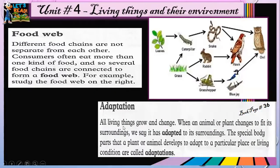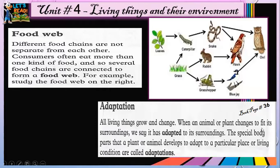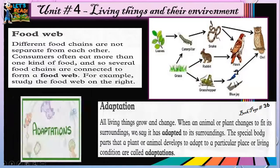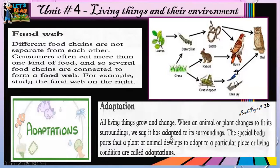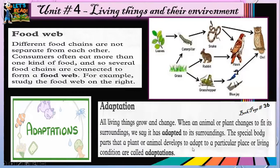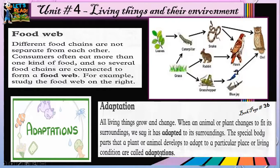Adaptation: all different things grow and change. When an animal or plant changes to fit its surroundings, we say it has adapted to its surroundings. The special body parts that a plant or animal develops to adapt to a particular place or living condition are called adaptations.